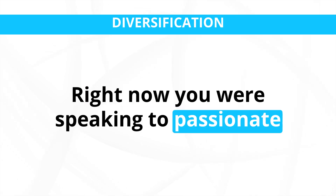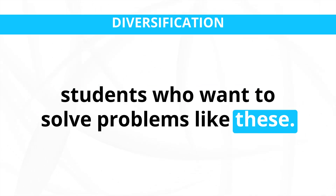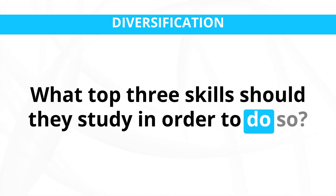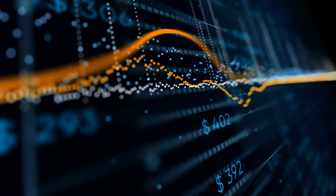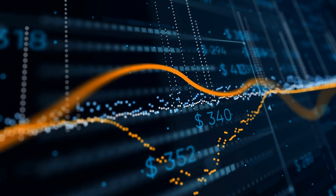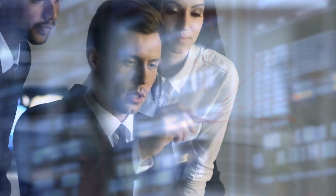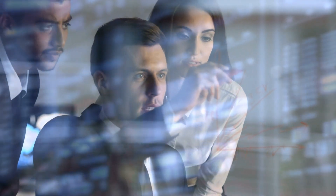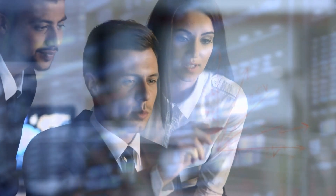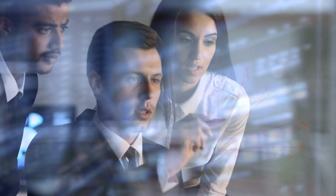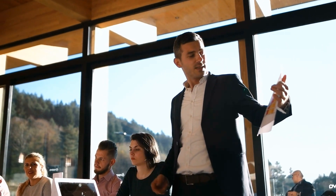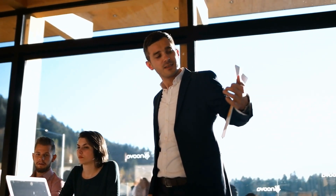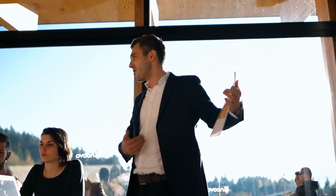For passionate students who want to solve problems like these, the top three skills to study are: first, economic analysis and policy development — understand economic theories, trends, and policies to develop strategies for diversification and poverty alleviation; second, data analysis and research — strong analytical skills are essential for conducting economic research and assessing potential sectors for diversification; third, leadership and communication — effectively communicate ideas, build partnerships, and lead initiatives to drive economic diversification and poverty reduction efforts.